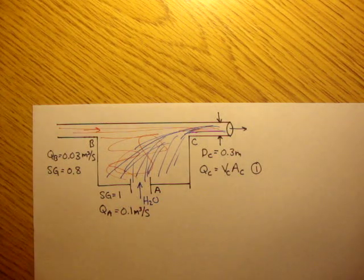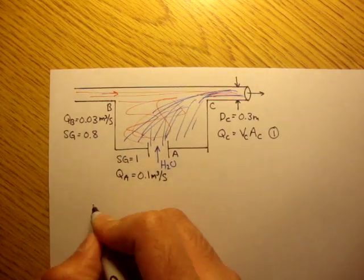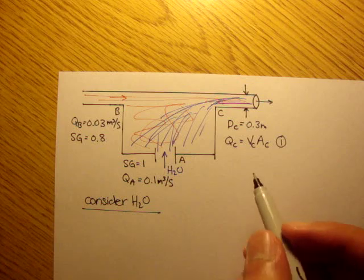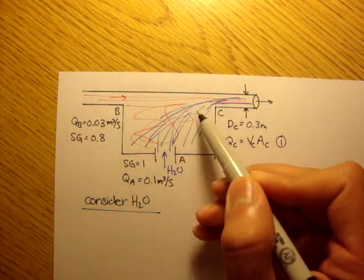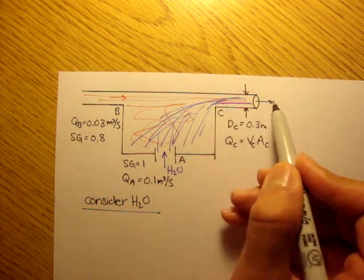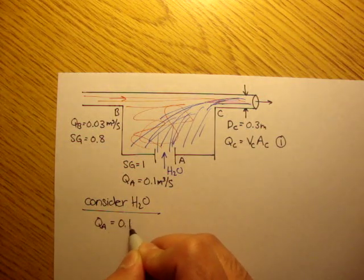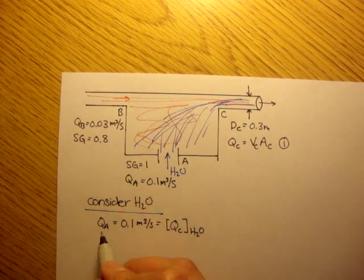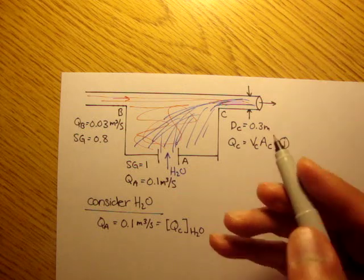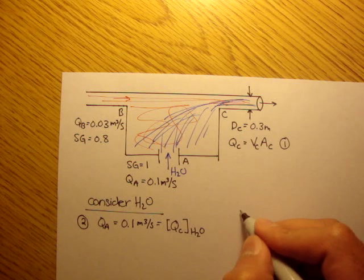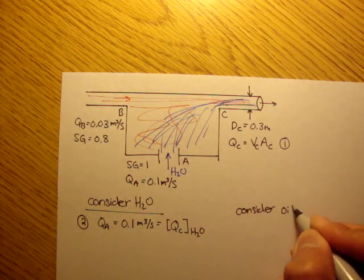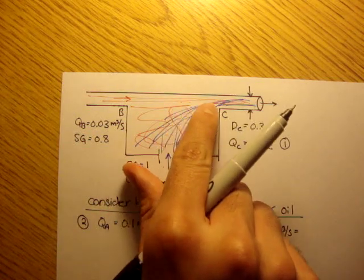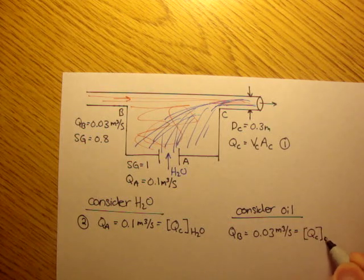There are a couple of ways to solve these problems. First, let's consider the water only. From the Reynolds transport theorem, the amount of mass of water coming into the control volume must equal the water coming out. So QA, which is 0.1 meters cubed per second, is equal to QC of water — that's equation 2. Now consider the oil only: QB, which is 0.03 meters cubed per second, is equal to QC of just the oil — equation 3.